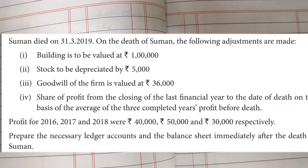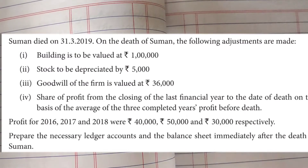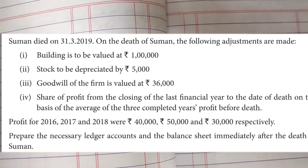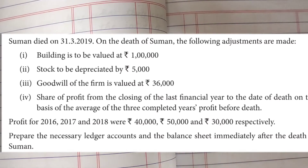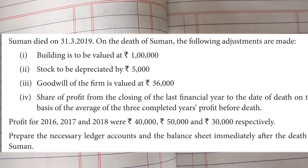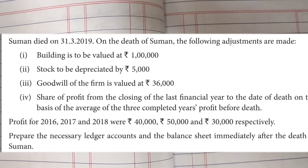Suman died on 31/3/2019. On the death of Suman the following adjustments are made: buildings are revalued and stock is depreciated — both relate to the revaluation account. Goodwill of the firm is valued at 36,000 to be adjusted among partners. Share of profit also has to be adjusted. We need to prepare the necessary ledger accounts and balance sheet immediately after the death of Suman.